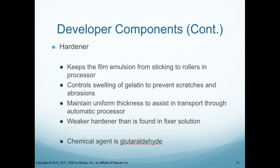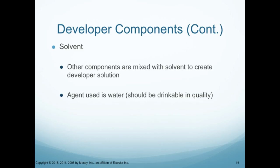The hardener keeps the film emulsion from sticking to the rollers in the processor. It controls the swelling of the gelatin to prevent scratches and abrasions, and maintains uniform thickness to assist in transport through the automatic processor. Note that the hardener found in the developer is weaker than the hardener found in the fixing solution — that makes sense because the developing stage is the beginning of the process, while the fixer stage is the end. The chemical agent used is glutaraldehyde.